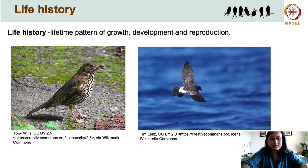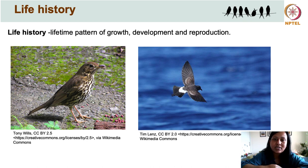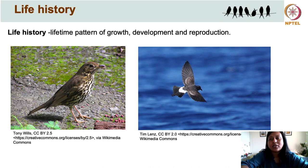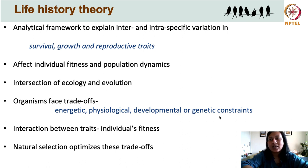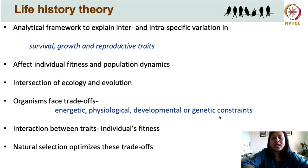So what causes these differences in life histories? Or more specifically, we can ask: what determines the age at which a bird starts reproducing, how many eggs it produces during each reproductive episode, and how long they live? Life history theory is basically the analytical framework that we use to explain these kinds of inter- and intraspecific variations in traits such as adult survival, growth rate, and reproductive traits.